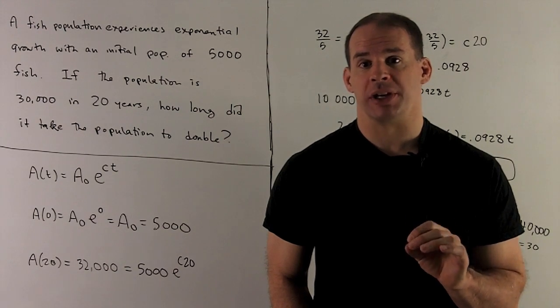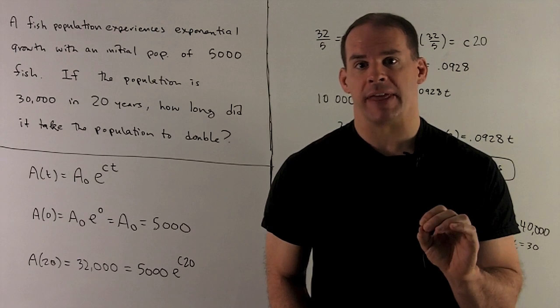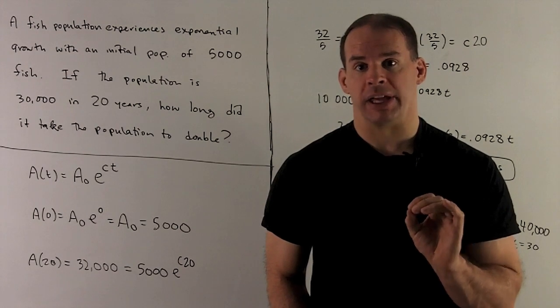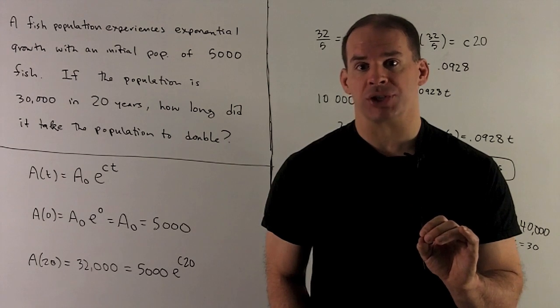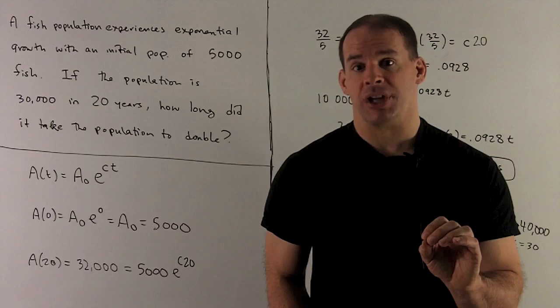A fish population experiences exponential growth with an initial population of 5,000 fish. Twenty years pass, and the population is now 32,000. How long did it take for the fish population to double?